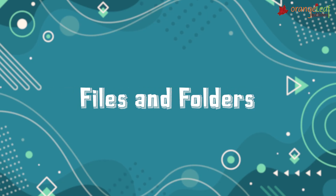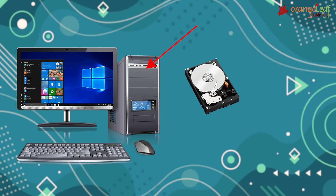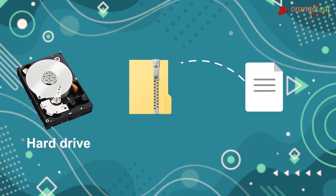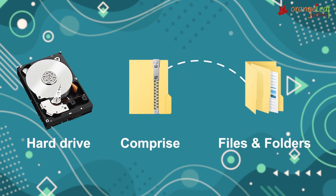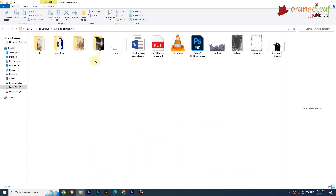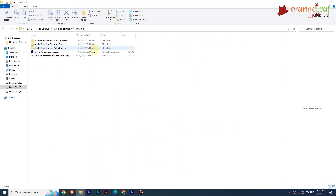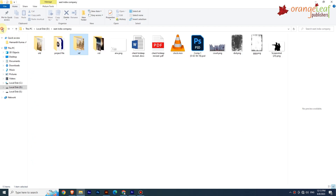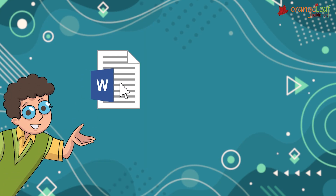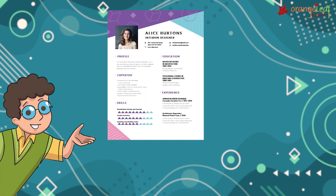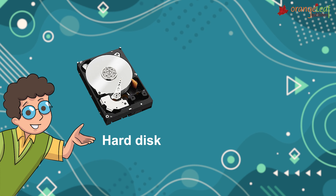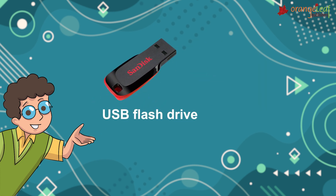Files and Folders: all data stored on the hard drive of your computer comprises files and folders. Folders are used to store and organize files and other folders. Files are used to store data. A file is a collection of data and information kept on a storage device such as a hard disk or USB flash drive.